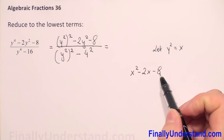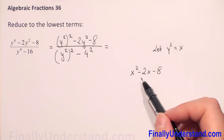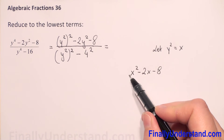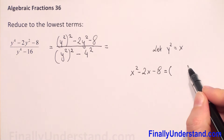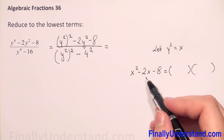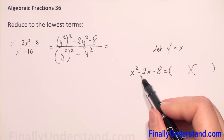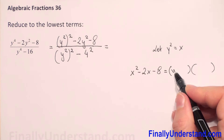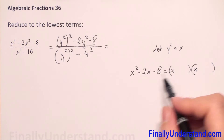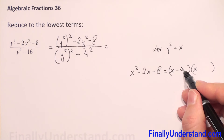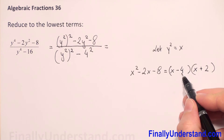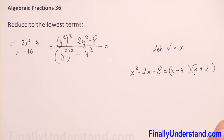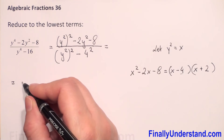Now it's a little easier to factorize this general quadratic trinomial. The coefficient before x squared is an invisible 1. To factorize this expression we need to find two numbers whose sum is negative 2 (the coefficient before x) and whose product is negative 8. Those numbers are negative 4 and 2, because negative 4 times 2 is negative 8 and negative 4 plus 2 is negative 2. So everything is correct.